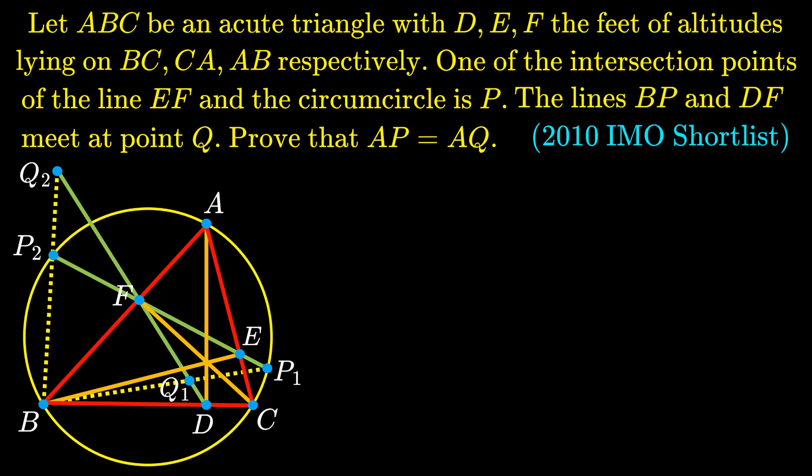This is a geometry problem from the 2010 IMO shortlist. Before we move on to proving this geometry fact, I want to point out that we do have two possible configurations in this problem, as the line EF can intersect the circumcircle at two possible points, P1 and P2.